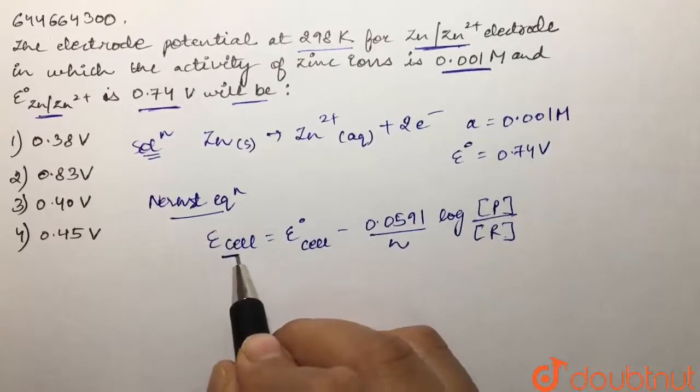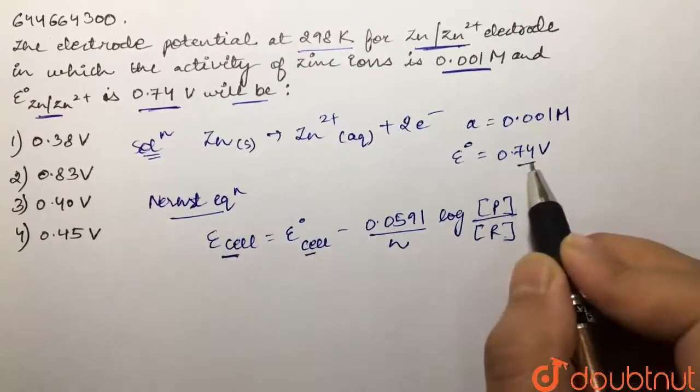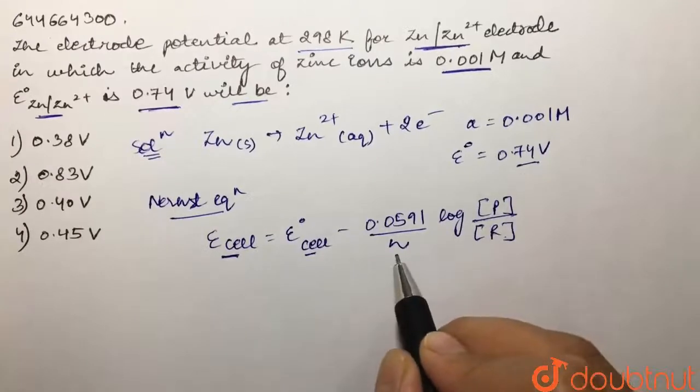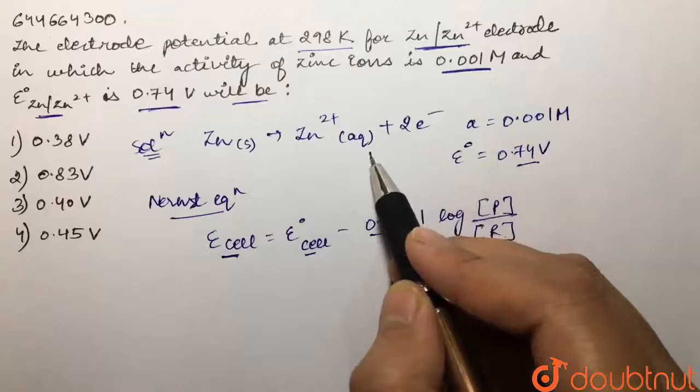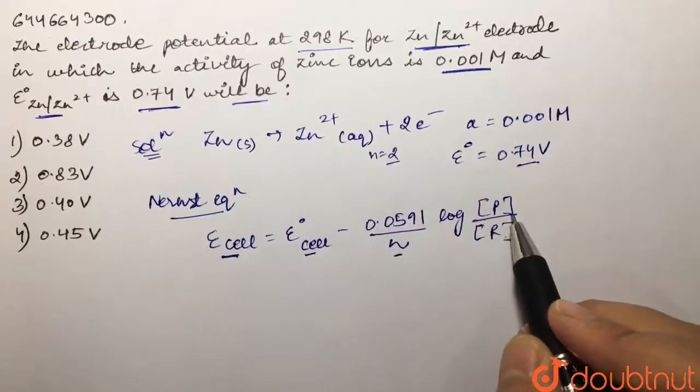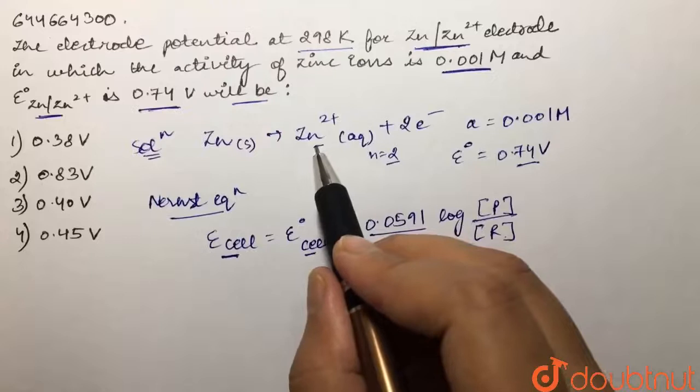E of cell is the thing that we need to calculate. E naught of cell is given to us, that is 0.74. Then n are the number of electrons involved, and we have two electrons over here, so n value comes out to be two.